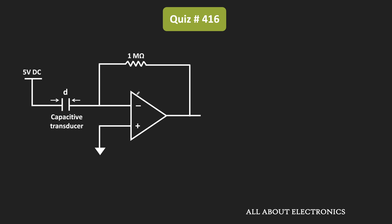If you observe this circuit, it is basically the differentiator circuit. Now typically, if you see the op-amp based differentiator circuit, then in that circuit, the input voltage is changing with the time, while the value of the capacitor is fixed.